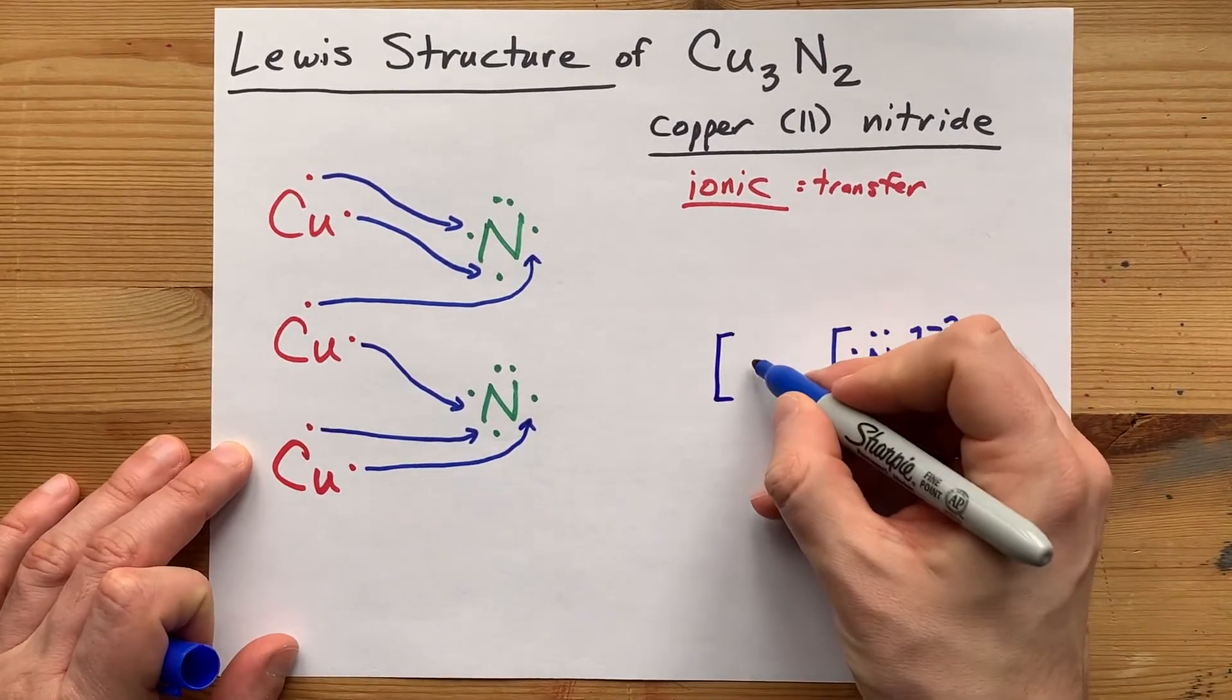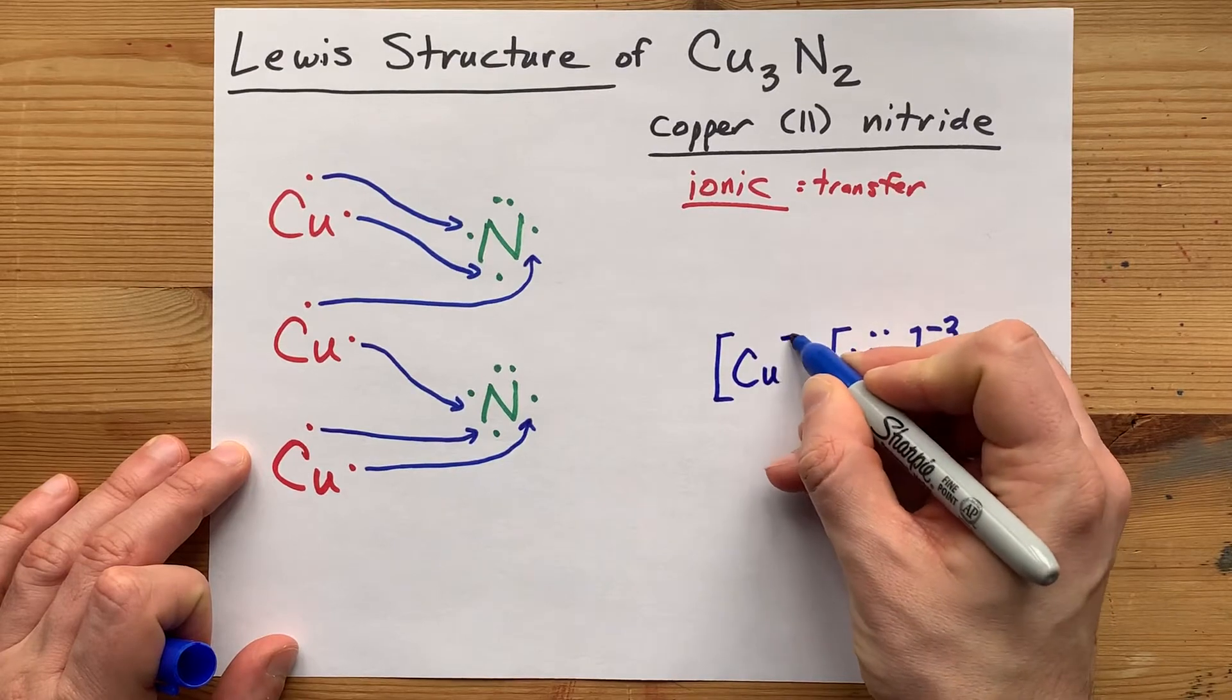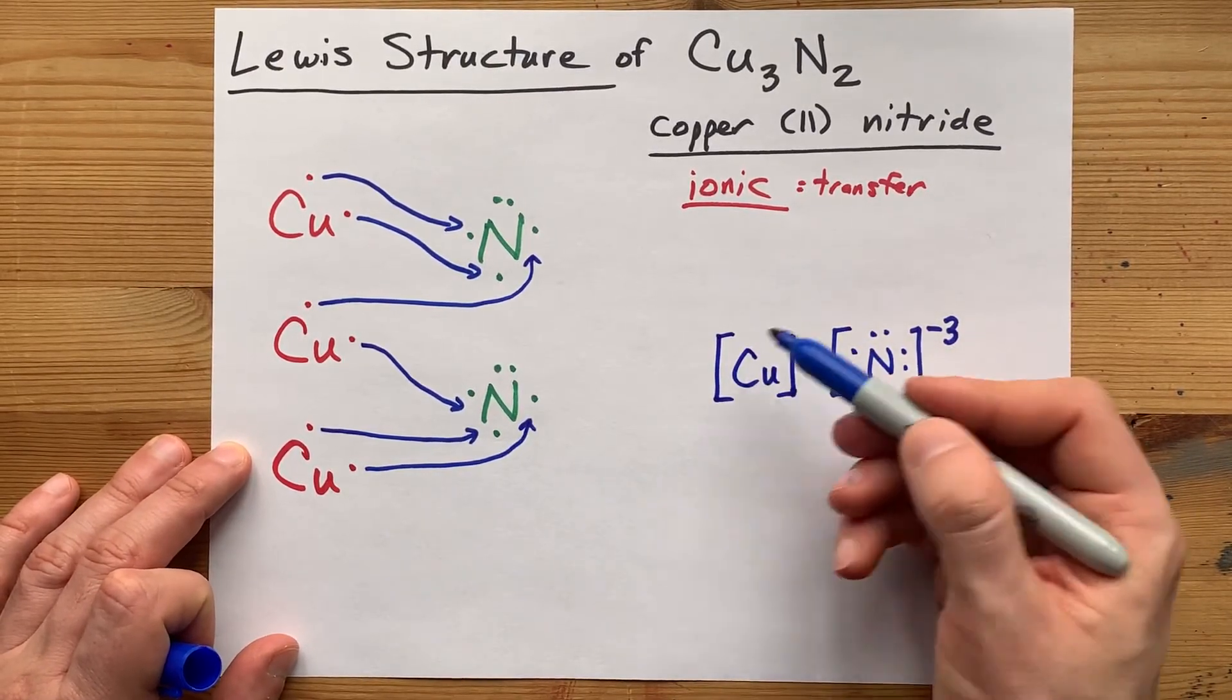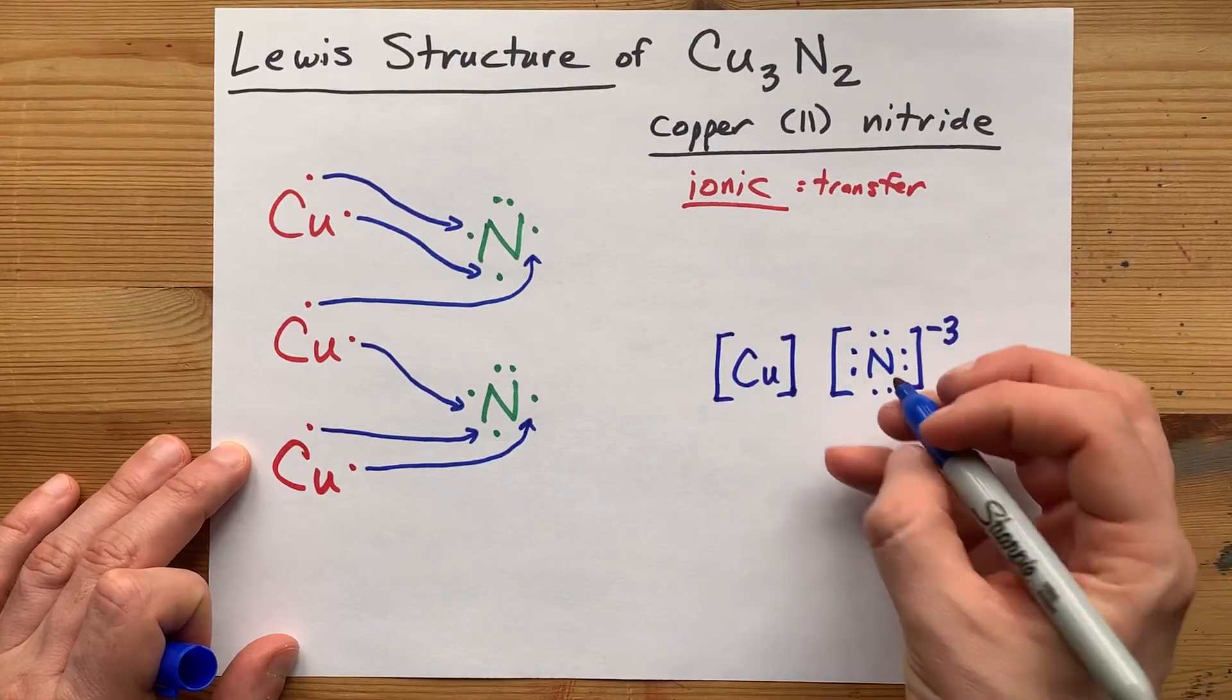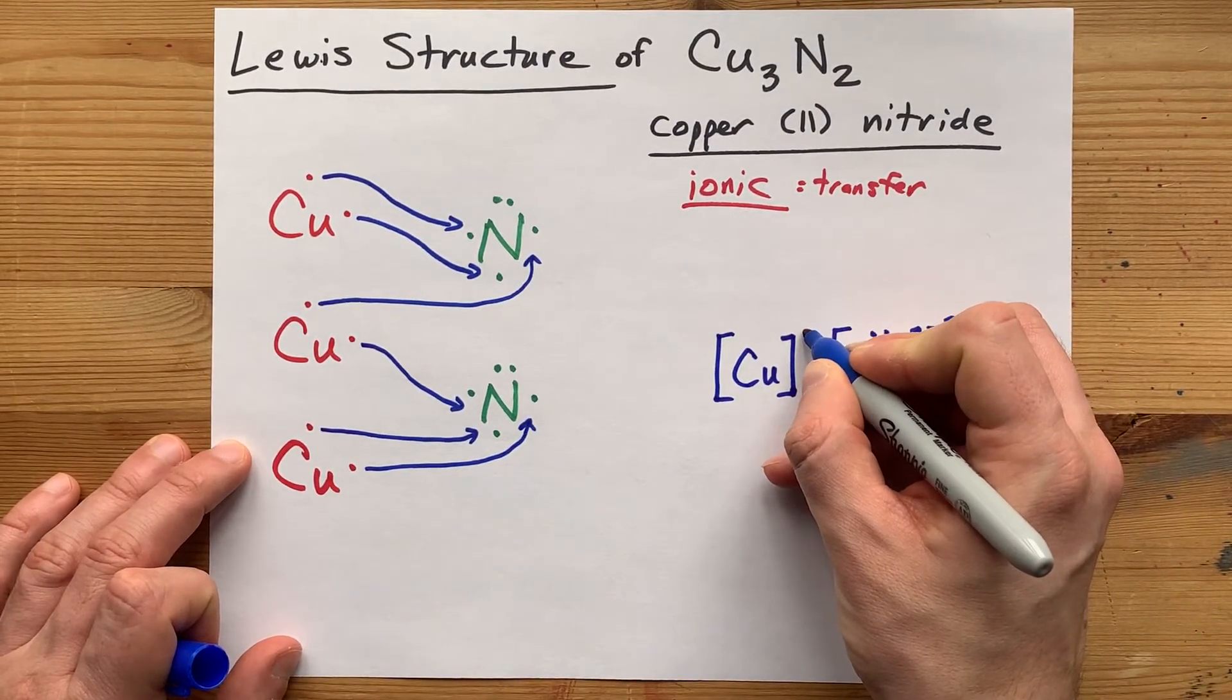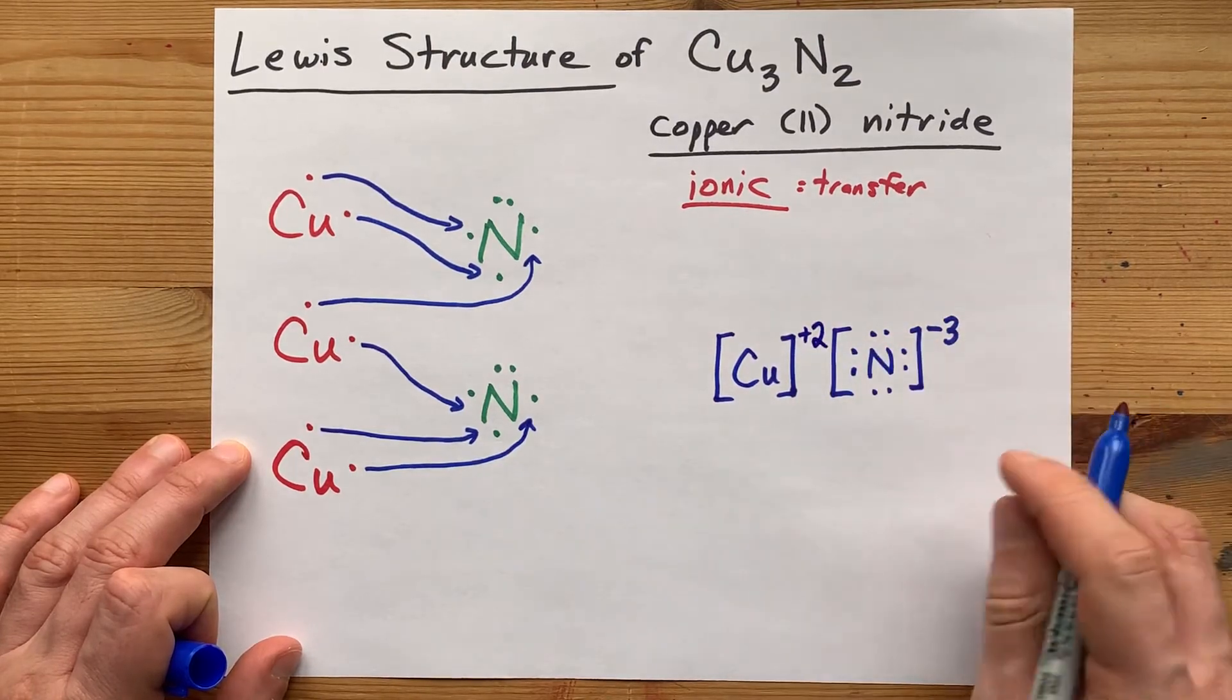Copper brought two. But don't draw it with any in the final structure, because each of the coppers gave away their electrons. They gave away two minus charged electrons each, so its charge is positive two.